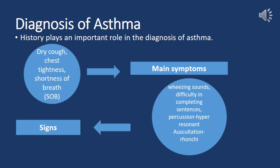Diagnosis of asthma: history plays an important role. Dry cough, chest tightness, and shortness of breath are the main symptoms. During examination, if the patient is symptomatic, wheezing sounds can be heard and they may exhibit difficulty completing sentences. Upon auscultation, you may hear ronchi, and during percussion there may be hyper-resonant percussion notes.